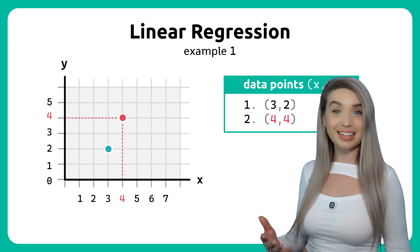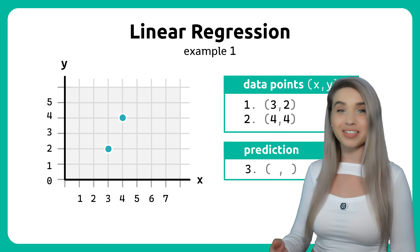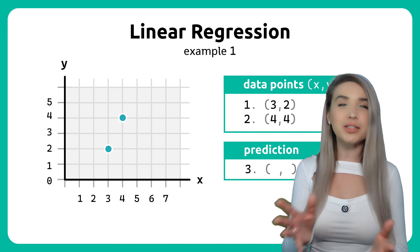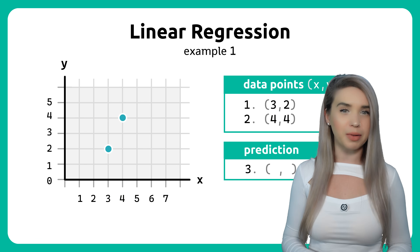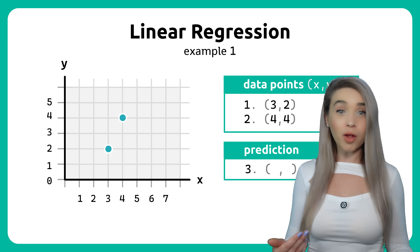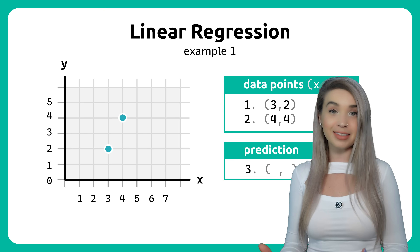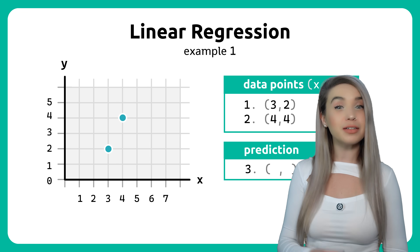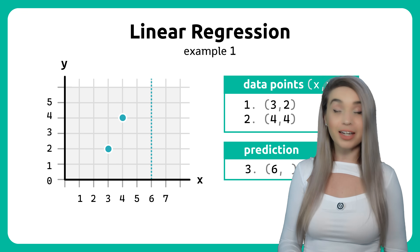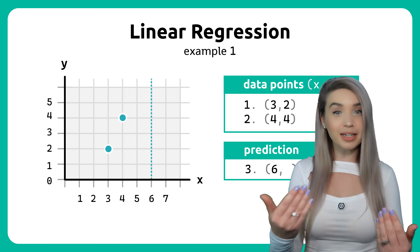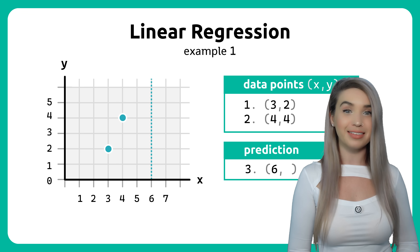Let's say that there's another data point but we don't really know much about it. All we know is that it has the x value of 6. So let's use linear regression to find the y.